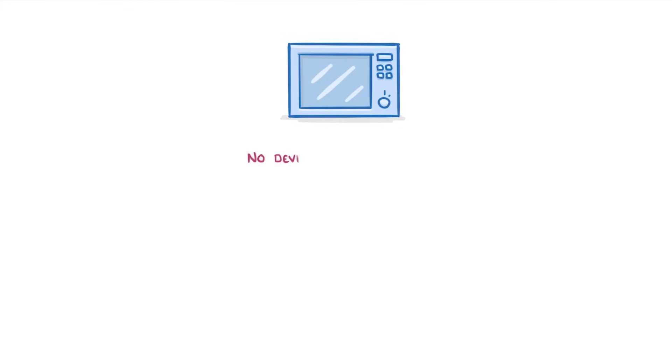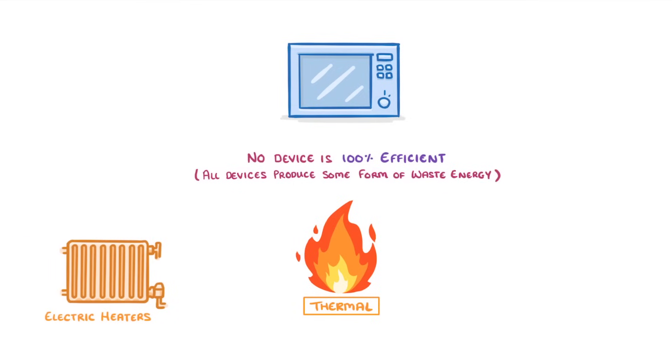No device is 100% efficient because all devices produce some form of waste energy, most often thermal energy. An exception is devices whose function is to produce heat in the first place. For example, if electric heaters produce thermal energy, it isn't really waste and would count as useful output.